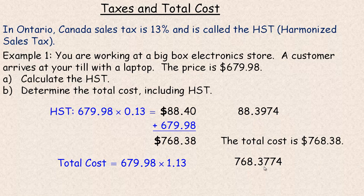The calculator gives us $768.38, the same as the original calculation. Now depending on the question and any rounding that might have been done, you might sometimes see a cent difference. It should often be the same, and sometimes maybe a penny off, but generally pretty much the same value.